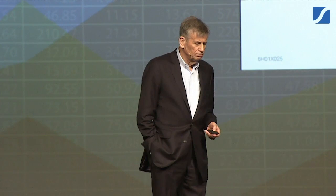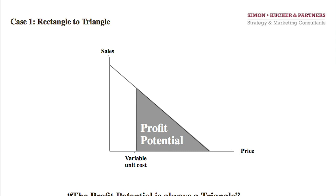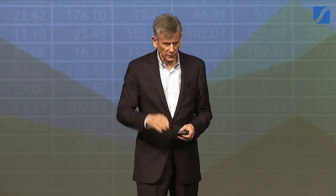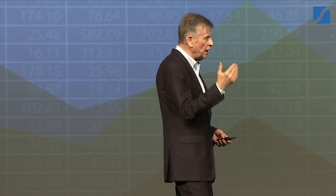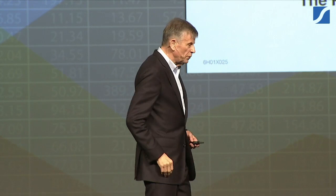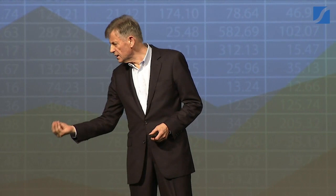What is the profit potential in a market? That is a triangle. Why triangle? I have here the price and the sales volume, and then you have what you call the demand curve in a typical market. Higher price means you sell less volume; lower price, you sell more volume. And the profit potential is the dark area below that curve above the variable unit cost. That's the profit in the market — it is there. But can you get it? Can you harvest it?